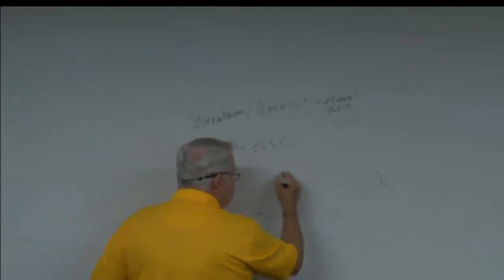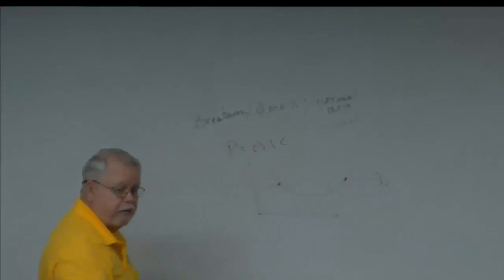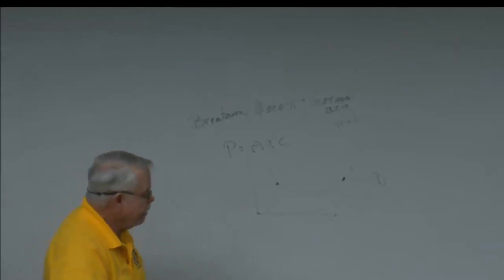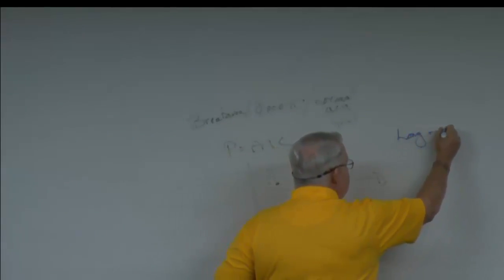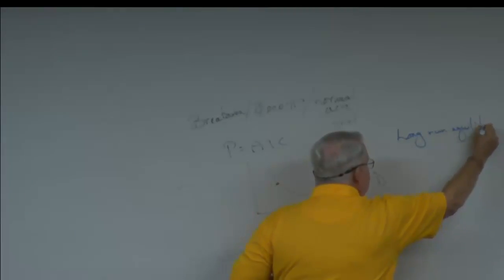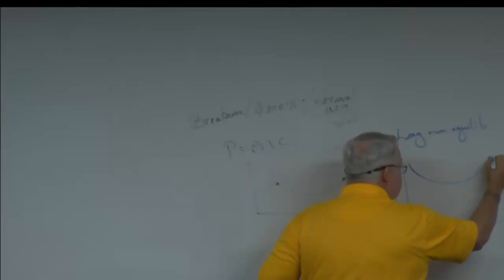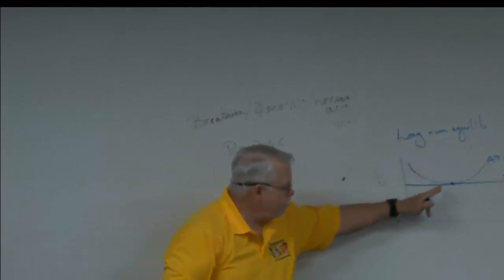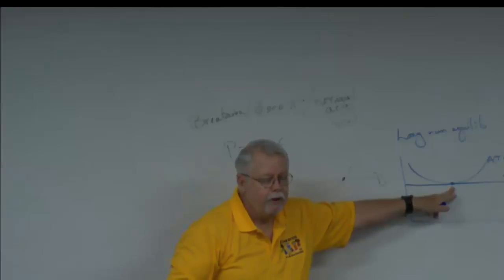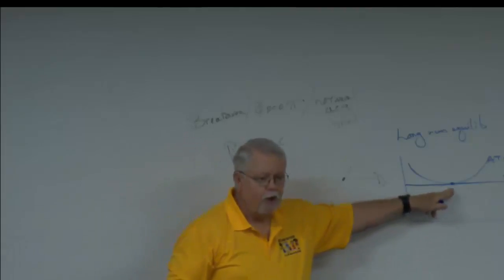Zero economic profit, or normal accounting profit, all refer to this condition — where the demand curve intersects the average cost curve. In the text they will talk about a long-run equilibrium for perfect competition: in the long run, the average total cost curve is tangent to the demand curve right at the bottom, and this is what they sometimes call the break-even point.